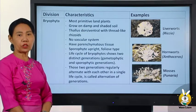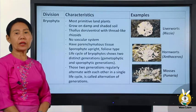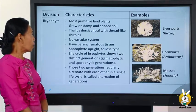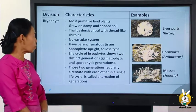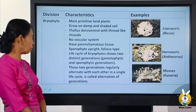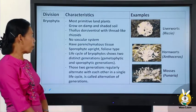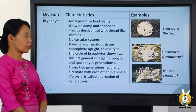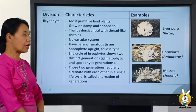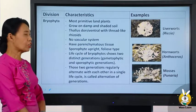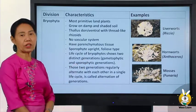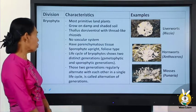They have parenchymatous tissue. The sporophyte produces spores. Life cycle of bryophytes shows two distinct generations: the gametophyte generation and the sporophyte generation.